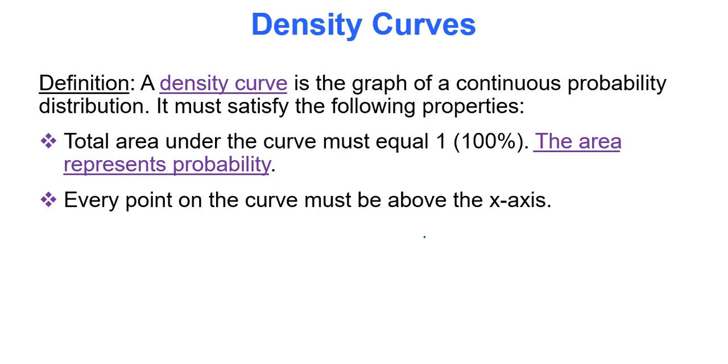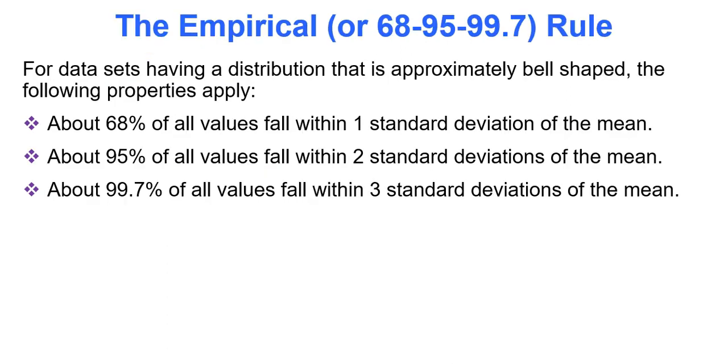So a density curve is the graph of a continuous probability distribution. A density curve, which is that bell shape that normally distributed data shape, the total area under the curve must equal one, that's because the area represents probability. Remember all the probabilities of all the possible outcomes within a sample space, aka the area under the curve, must equal one or hundred percent. And every point on the curve must be above the x-axis, so the x-axis will be our number line and then probabilities will be the area underneath that curve.